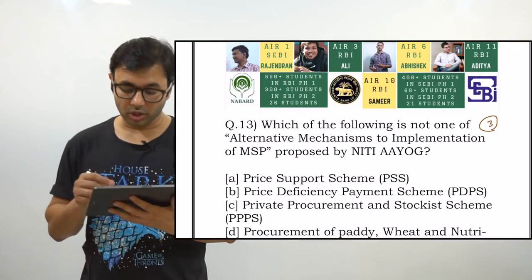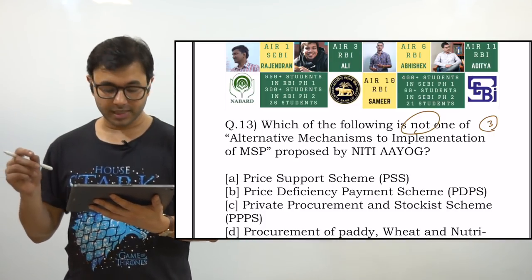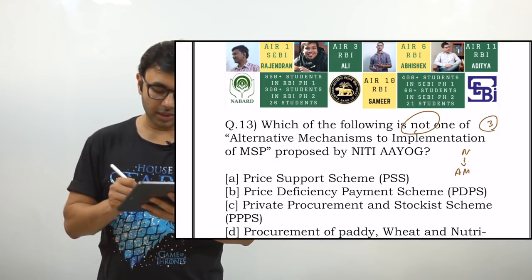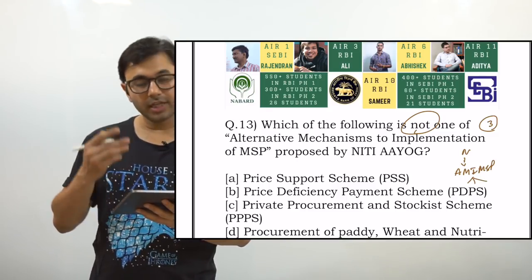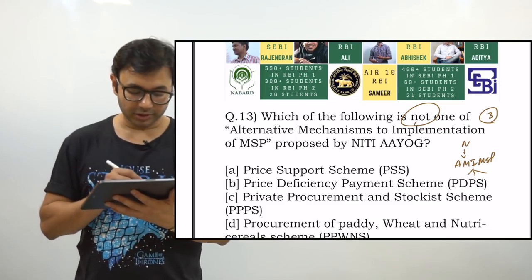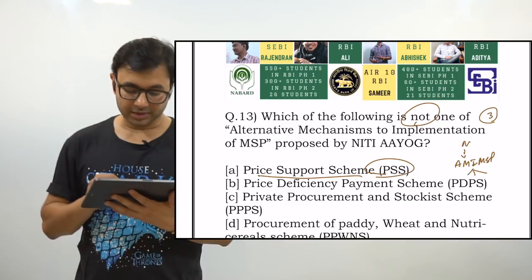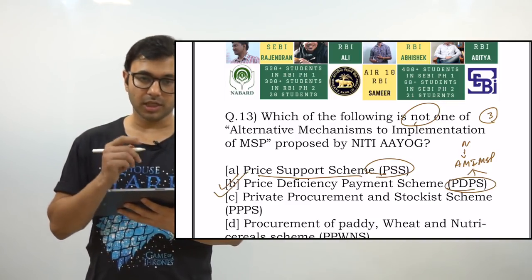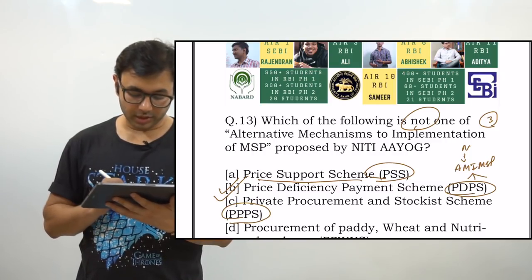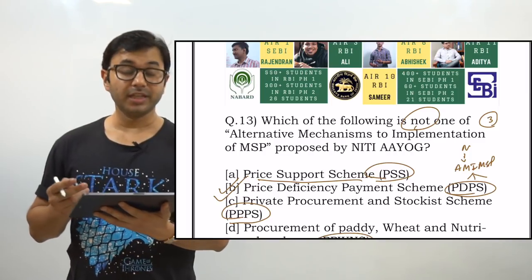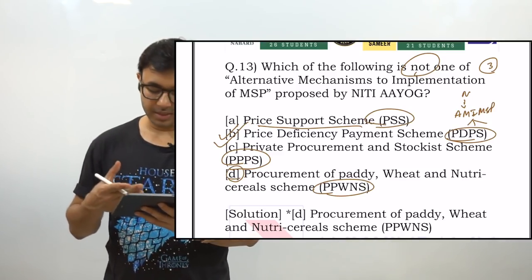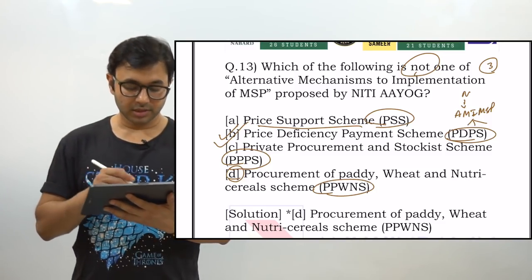The next question is: which of the following is NOT one of the alternative mechanisms to implementation of MSP proposed by NITI Aayog? NITI Aayog made recommendations under alternate mechanisms to implement MSP, and there are three recommendations. The options are: A) Price Support Scheme (PSS); B) Price Deficiency Payment Scheme (PDPS); C) Private Procurement and Stockist Scheme (PPSS); D) Procurement of Paddy, Wheat and Nutri-cereal Scheme (PPWNS). The correct answer is D — it was made up and is not one of the three recommended mechanisms.